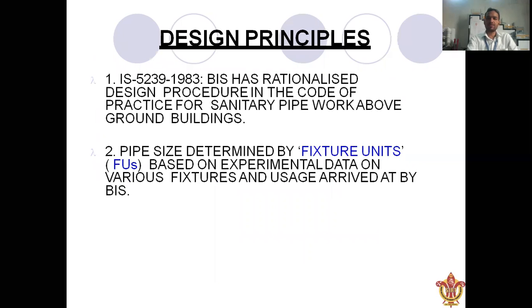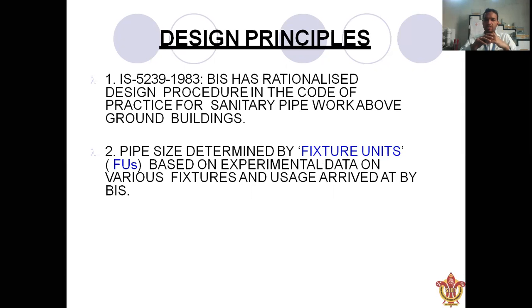Now the design principle: how do we design the one pipe and two pipe system? The relevant code is IS 5239 of 1983 from the Bureau of Indian Standards. Pipe size is determined using this code, which can be used for design purposes for both one pipe and two pipe systems.